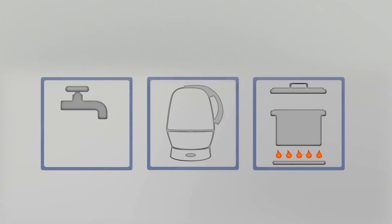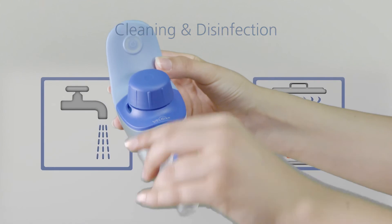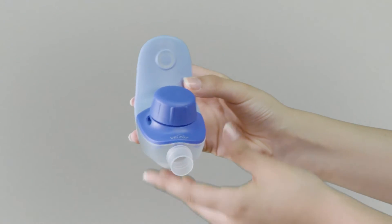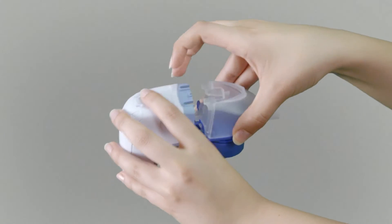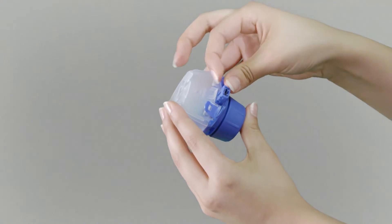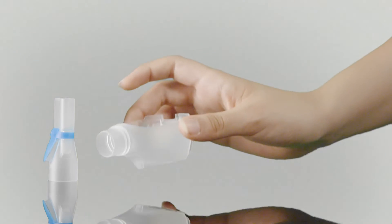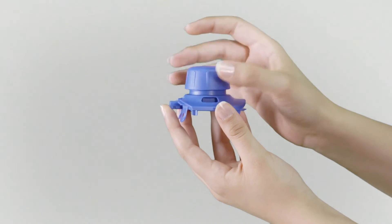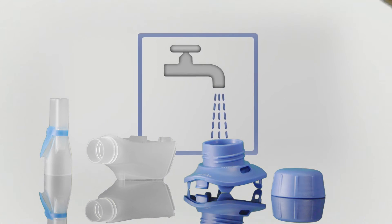The nebulizer should be cleaned after every inhalation session. First, remove the mouthpiece or mask from the nebulizer. Then remove it from the controller and dismantle it. Place all the components of the nebulizer, but not the controller, in warm water with some dishwashing liquid for around 5 minutes. Afterwards, rinse them thoroughly under running water.